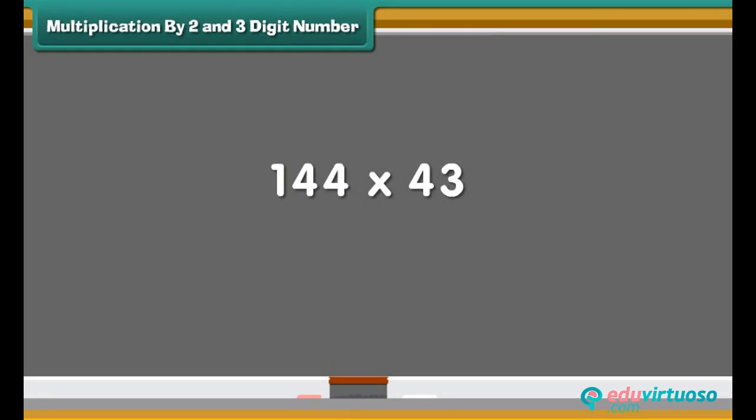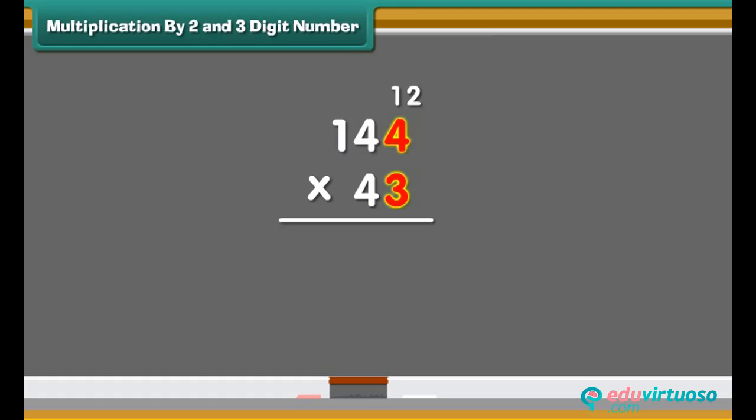Let us multiply 144 by 43. Start multiplication from 1's place. 3 times 4 are 12. Write 2 in the 1's place and carry the 1 forward to the 10's place. Multiply 3 from the number on 10's place, that is 4, equals to 12, and add 1 which was carried forward, that is equal to 13. Write 3 in the 10's place and carry the 1 forward to the 100's place. Multiply 3 with the number on the 100's place and add 1 which was carried forward. We write 4 in the 100's place.